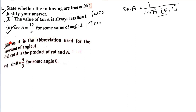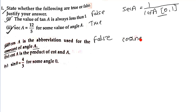Third: cos A is an abbreviation used for cosecant of angle A — this is false. Cosecant is different. For cos, the full name is cosine. Remember that. Cosecant is for a different ratio.